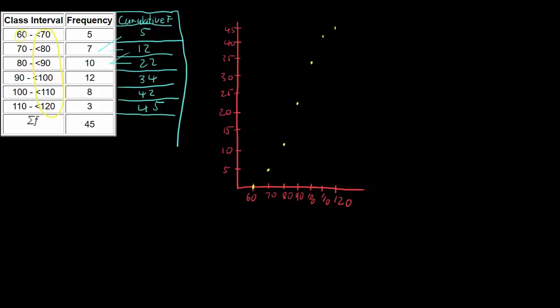To complete the ogive, we join all these points together with a nice smooth curve. We don't want to go straight from point to point — we want to curve our way through the points, creating a nice smooth S-shaped curve. And that's the ogive.